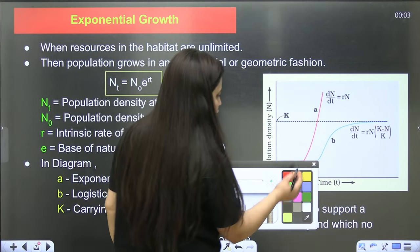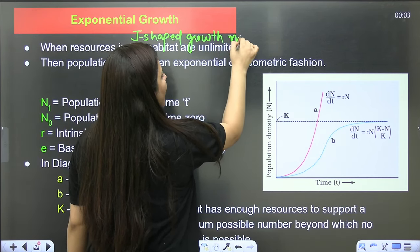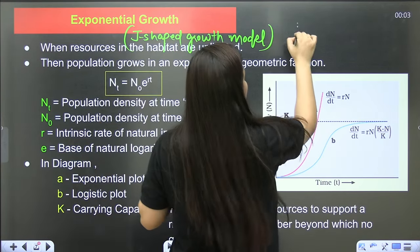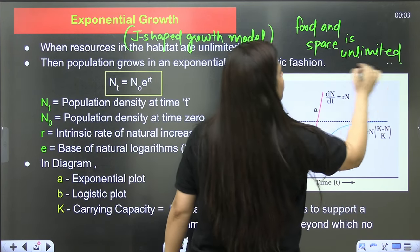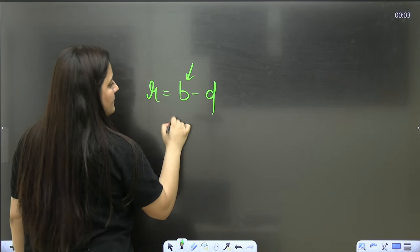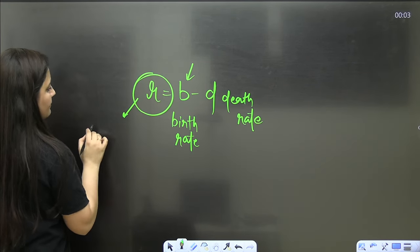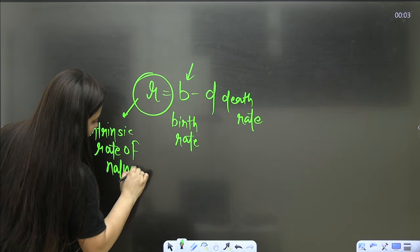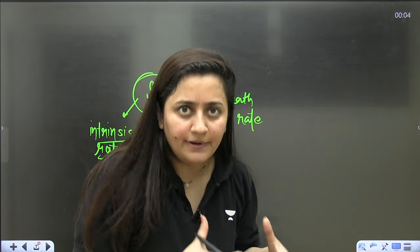When talking about population growth, there are two growth models. The first is the exponential model, also known as the J-shaped growth model. It is not realistic because, as per this model, food and space are unlimited and organisms reproduce at their maximum potential. Here r = b − d, where b is birth rate and d is death rate. r is the intrinsic rate of natural increase, also called biotic potential.